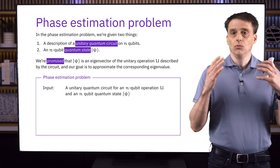Next, we'll see how we can solve the phase estimation problem with a quantum computer, starting with a warm-up. What we'll do is make use of the phase kickback phenomenon to try to learn something about the eigenvalue corresponding to a given eigenvector. In the phase estimation problem, we're given the description of a unitary quantum circuit for some operation u, and we use this circuit description to create a new circuit that implements a controlled-u operation, with a control qubit added on top.